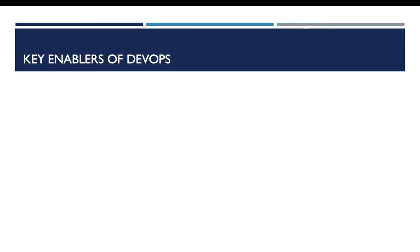Now for the key enablers of DevOps. You have to know that DevOps is closely related to many fields. The first field is the lean thinking field, and it inherits many paradigms from lean thinking. The first one is about the value creation paradigm: in DevOps, only features or development steps which add value are considered, and the rest is considered as waste.